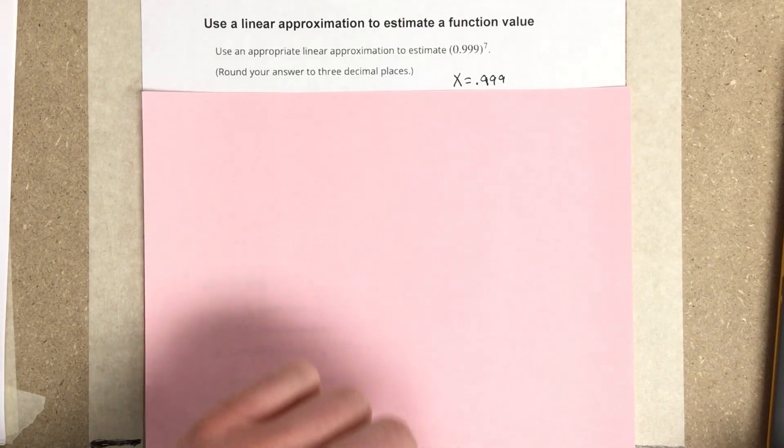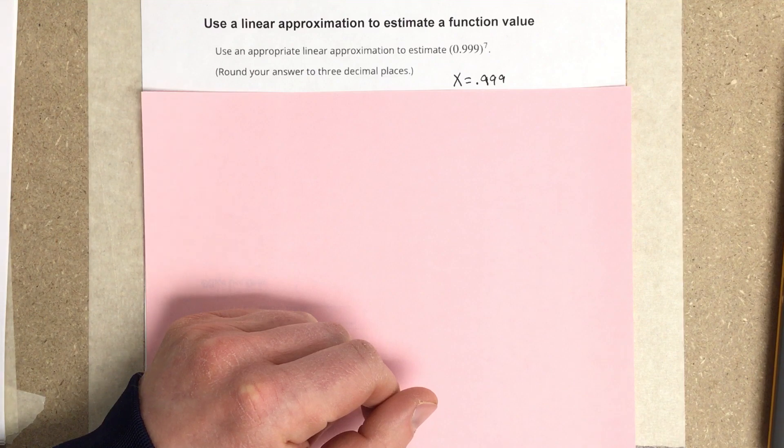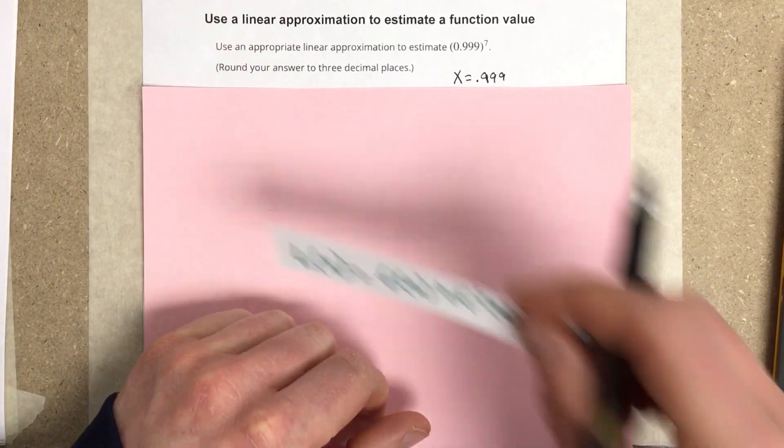In this video, we're going to use a linear approximation to estimate a function value. Use an appropriate linear approximation to estimate 0.999 to the 7th power.